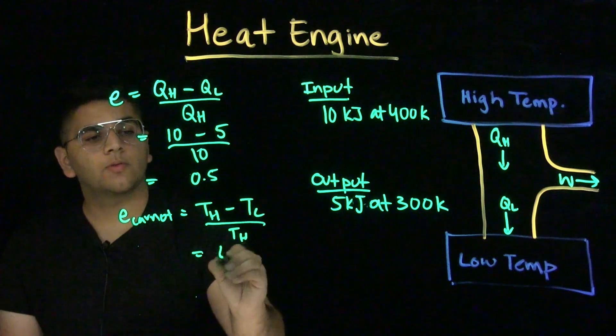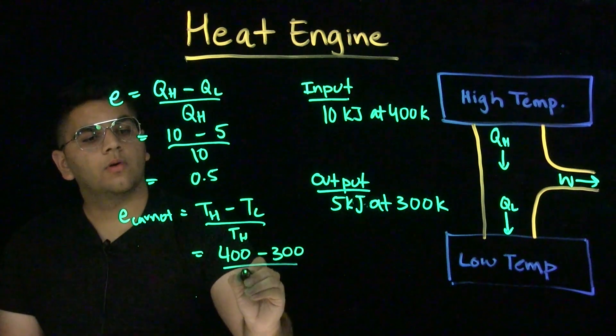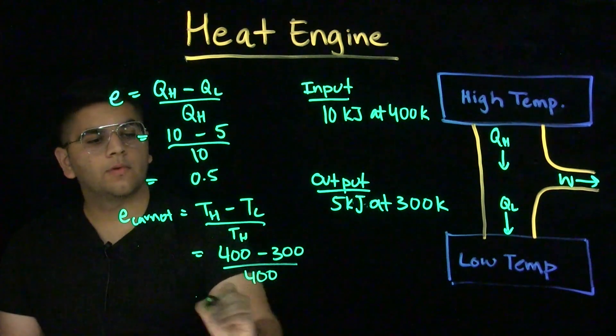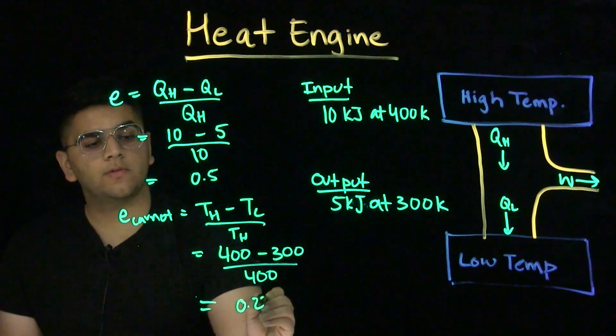When we input our numbers, we have 400 Kelvin minus 300 Kelvin over 400. When we do this math, we get an efficiency of 0.25.